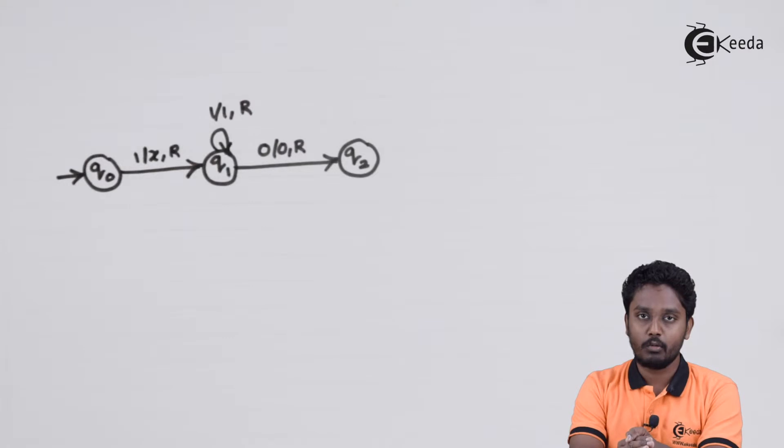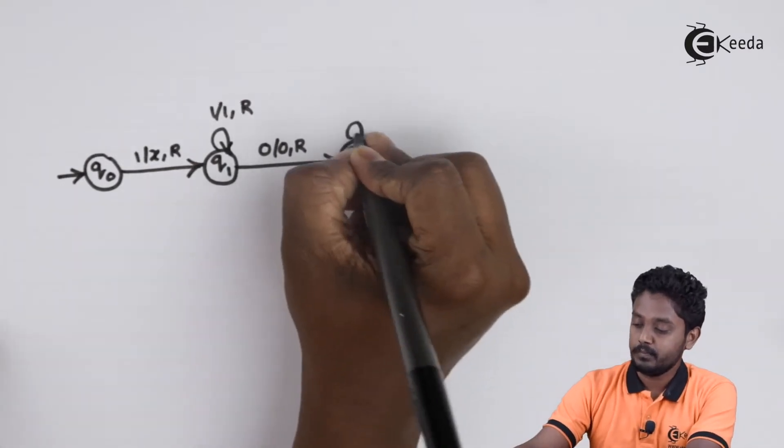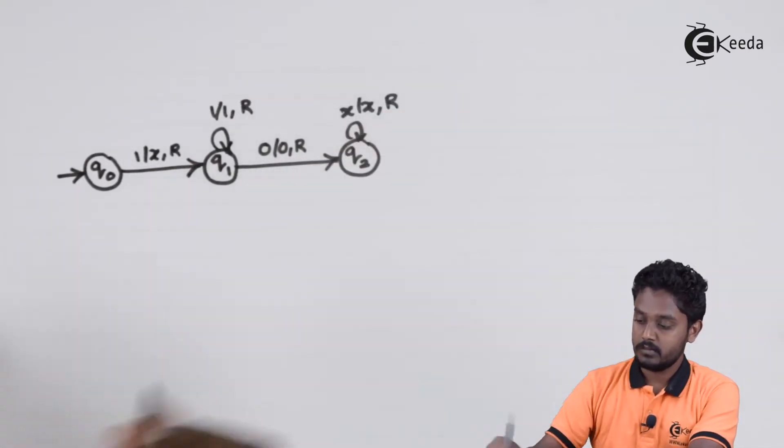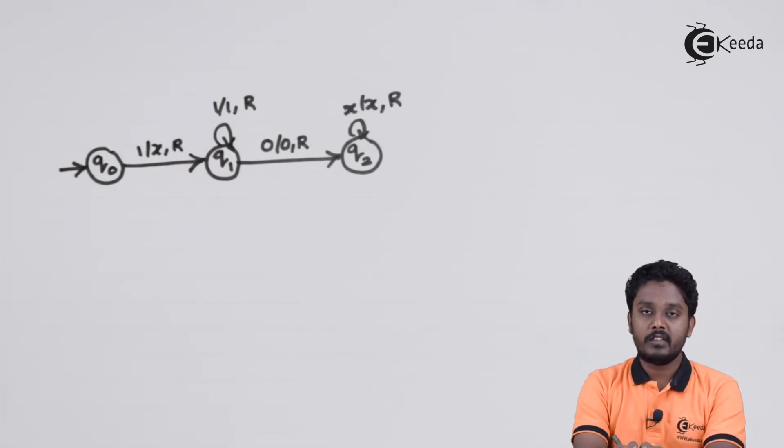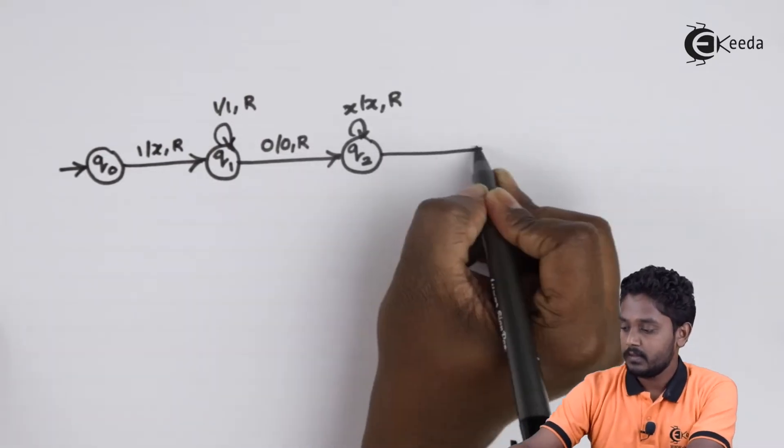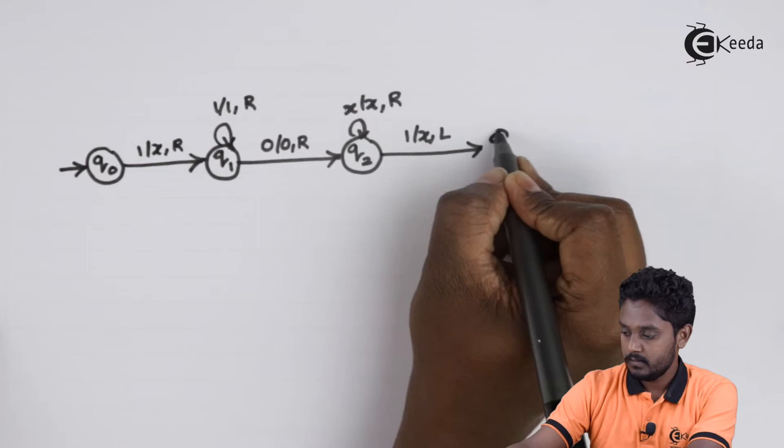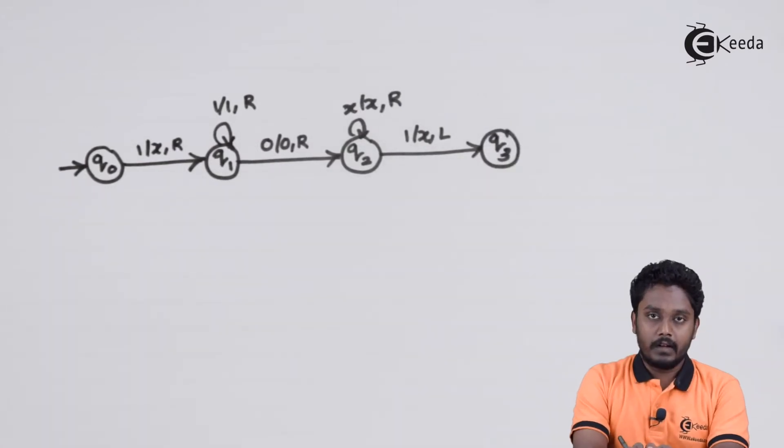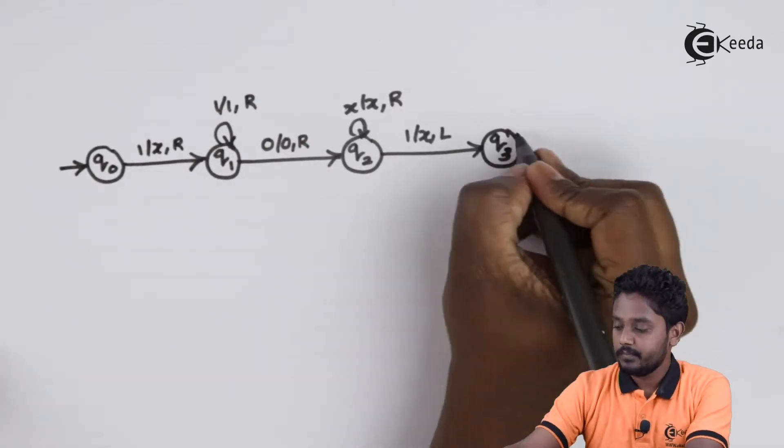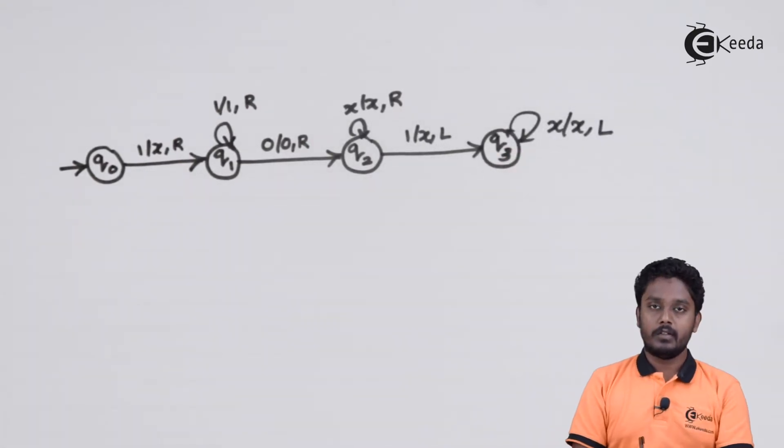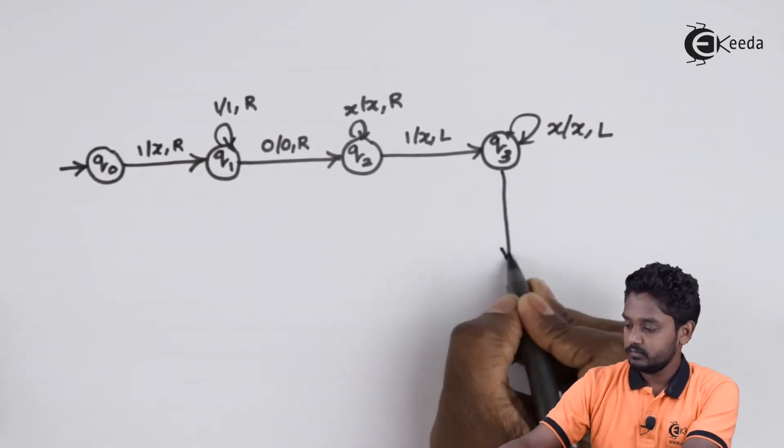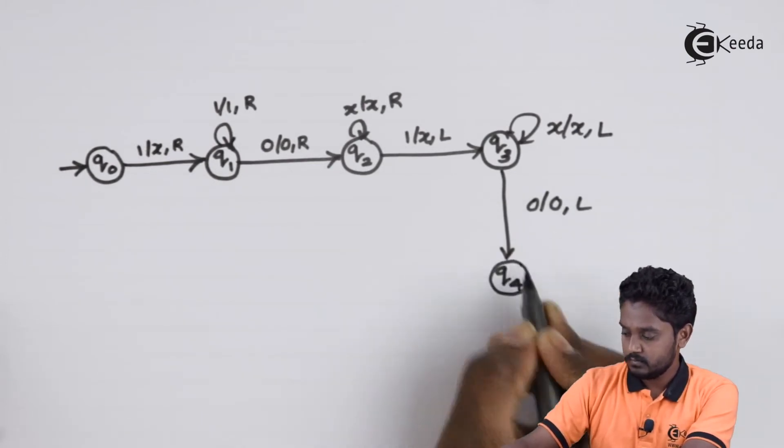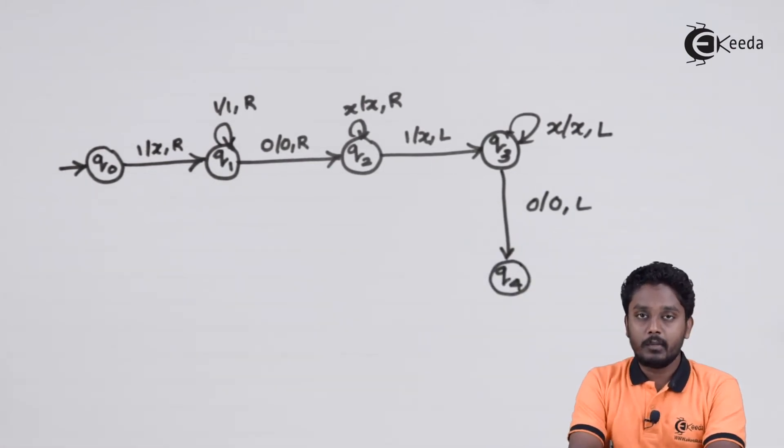0 will represent the middle of the string. After that, we might encounter some number of x's. When we see the first one, replace it with x and keep on moving to the left. Whenever we see 0, we know that we have reached the middle of the string.